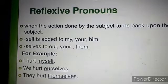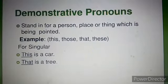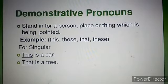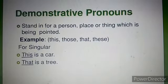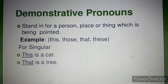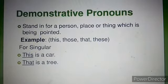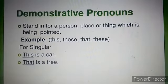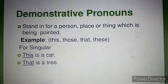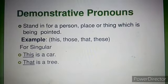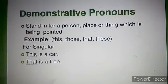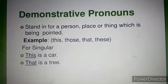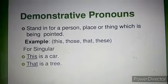Then we have demonstrative pronouns. Demonstrative pronouns stand in for a person, place, or thing being pointed at. They are: this, that, these, and those. For singular, we use this and that. For example, 'This is a car' and 'That is a tree' — the article a is used because they are singular, so this and that are for singular.